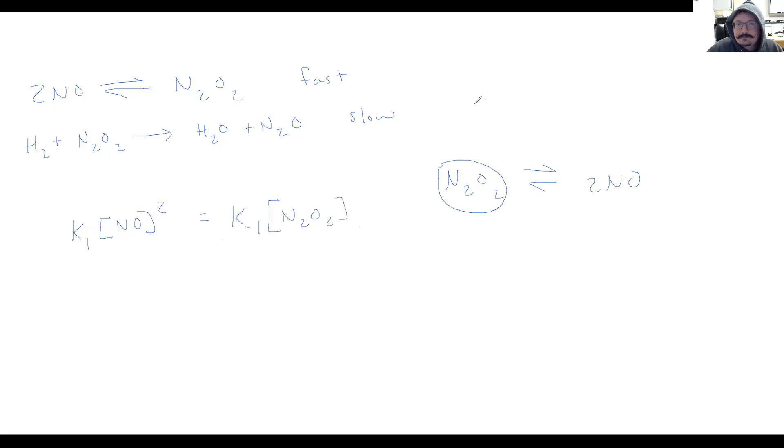For our slow reaction, we'll call that rate constant K2. We have H2, and we have N2O2. So this should be the rate expression for the slow elementary step. Well, we'll notice that I have N2O2 present in the second slow step, and I have N2O2 right here in that reversible expression. So I need to rewrite this expression for the fast step so that I've isolated N2O2. I've isolated what that is equal to, and then I can substitute it in right here.